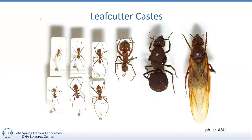Drones are actually haploid. Ants, bees, and termites demonstrate what's known as haplodiploidy. When a queen lays a single unfertilized egg — a haploid egg — it will develop into a male if it survives. But we'll talk about that momentarily.